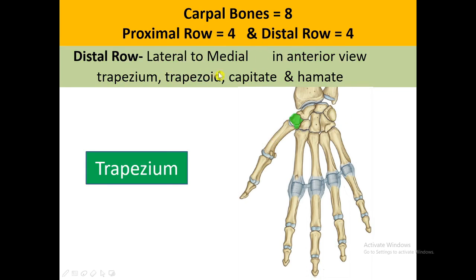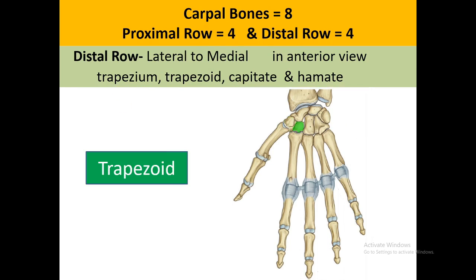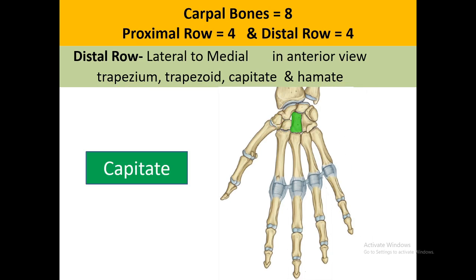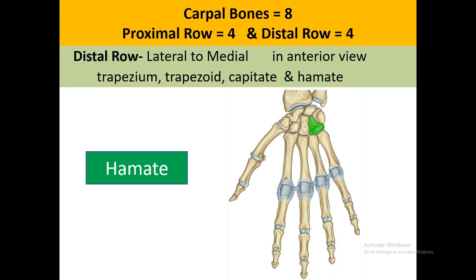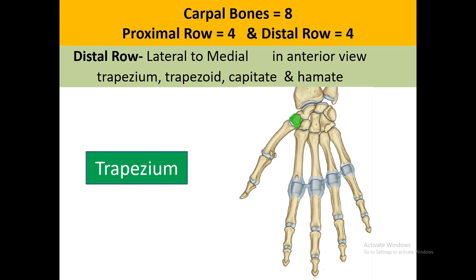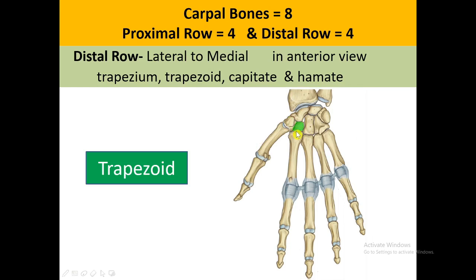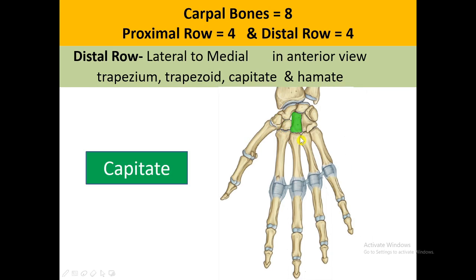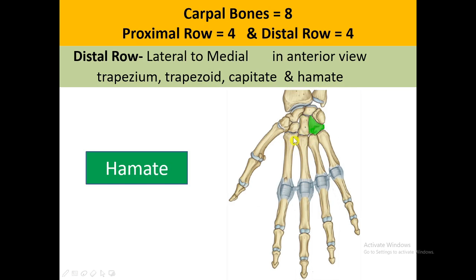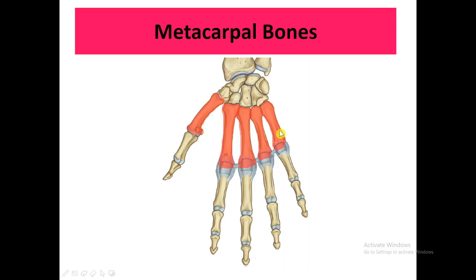The distal row also has four bones: trapezium, trapezoid, capitate, and hamate. The trapezium is an irregular four-sided bone. The trapezoid is also a four-sided bone. The capitate has a head and is the largest among the carpal bones. The hamate has a very prominent hook on the anterior side.